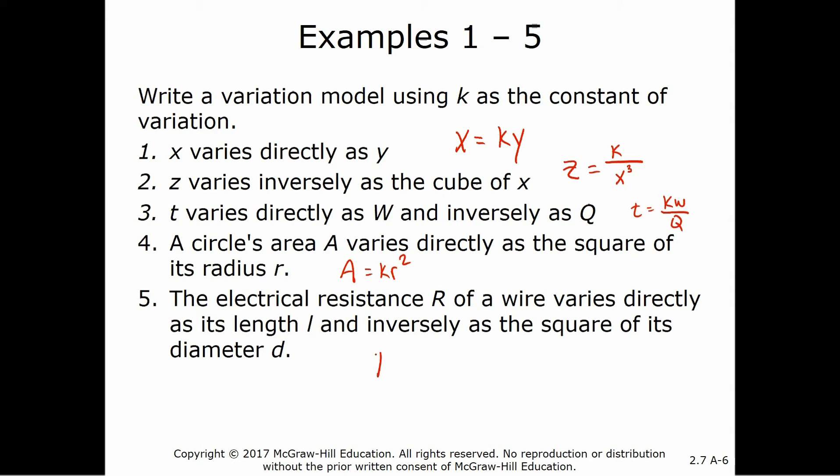The electrical resistance r of a wire varies directly as its length and inversely as the square of its diameter. So d squared.